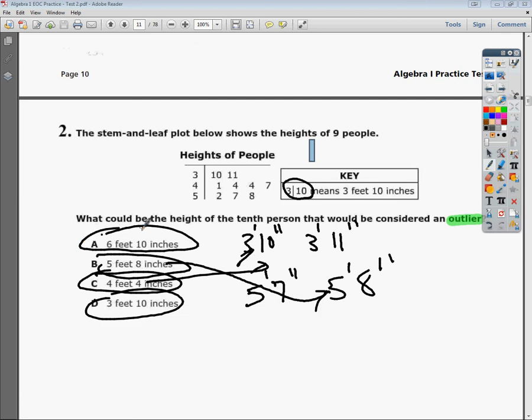So my answer is A, 6 foot 10 would fall way up here if I were to draw them, and it's a foot taller, more than a foot taller, than the largest value. So since the heights are so closely related, or they're clumped in between 3 foot 10 and 5 foot 8, we can reasonably say that my outlier would be 6 feet 10 inches. So that's it.